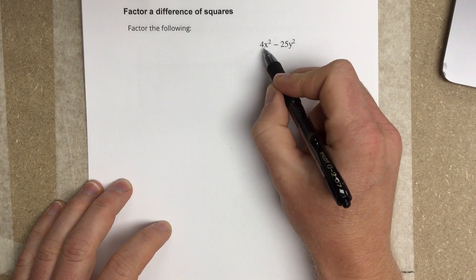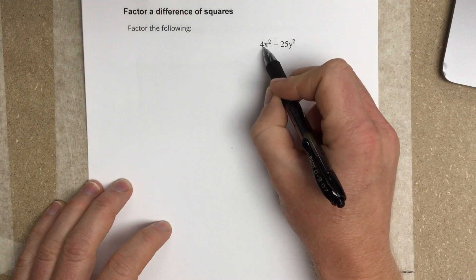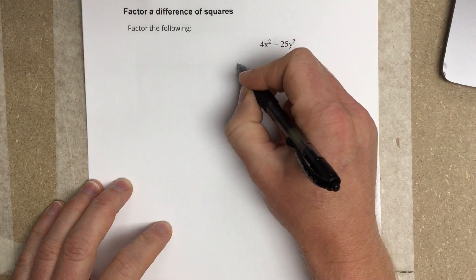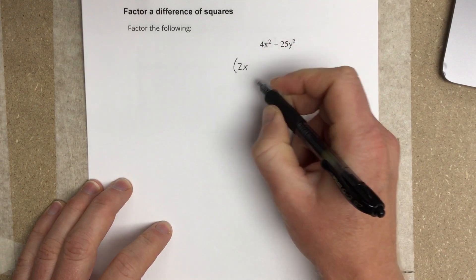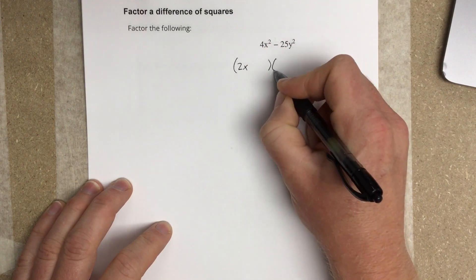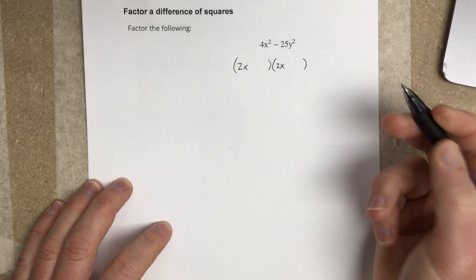So to factor this thing, what you do is simply take the square root of this piece. So you'd have 2x for your beginning term for each piece, because 2x times 2x gives you the 4x squared.